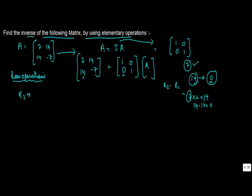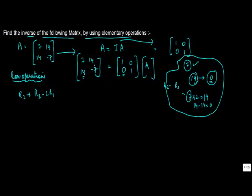So we write R2 = R2 - 2 * R1. The idea is to reduce this matrix into an identity matrix on the left side, because we know that A times A-inverse equals I. We started with I on the right side, so once we convert the left side into I, whatever values we get on the right side will be the inverse.